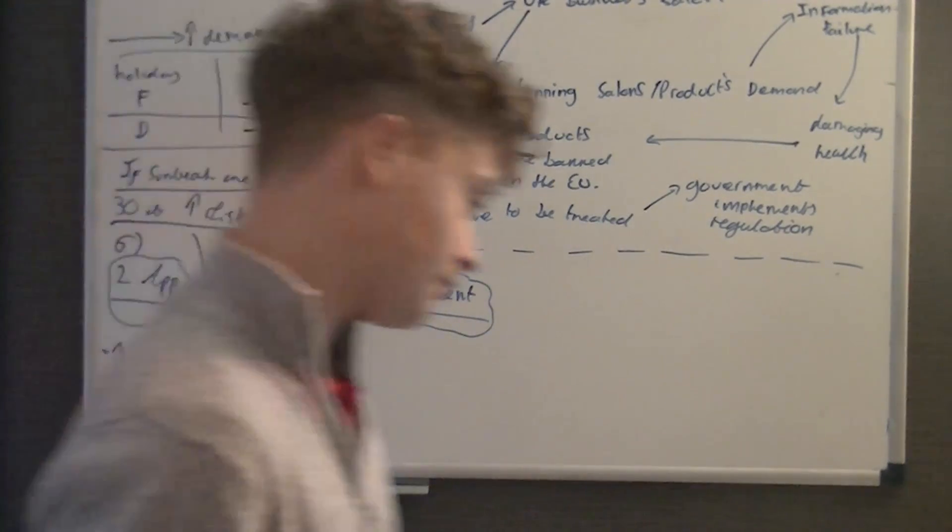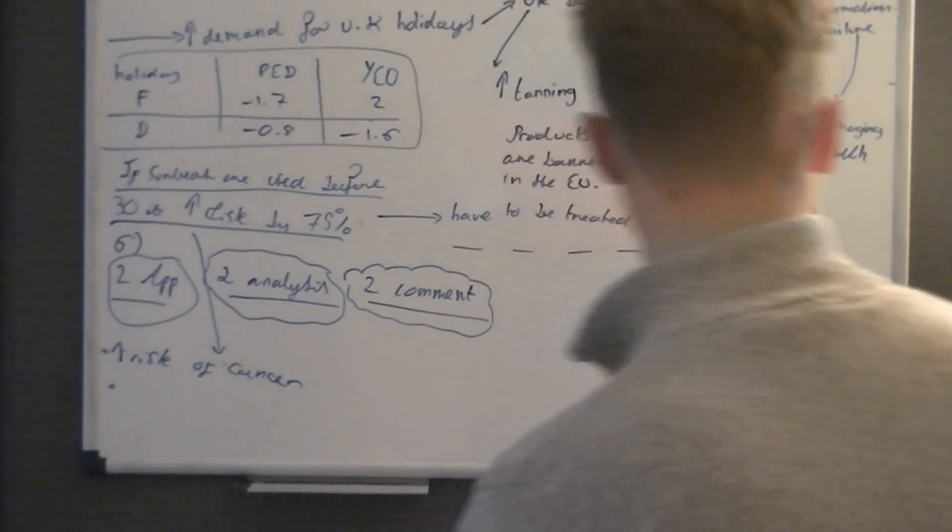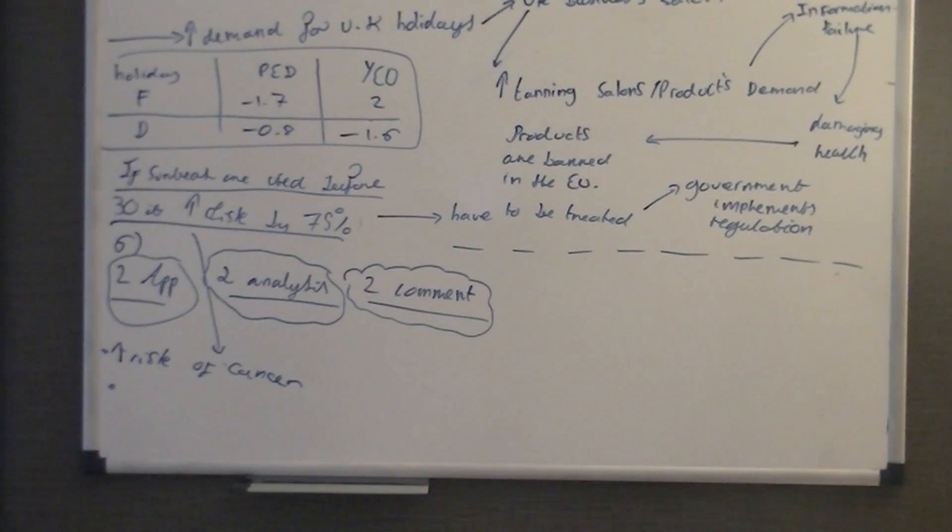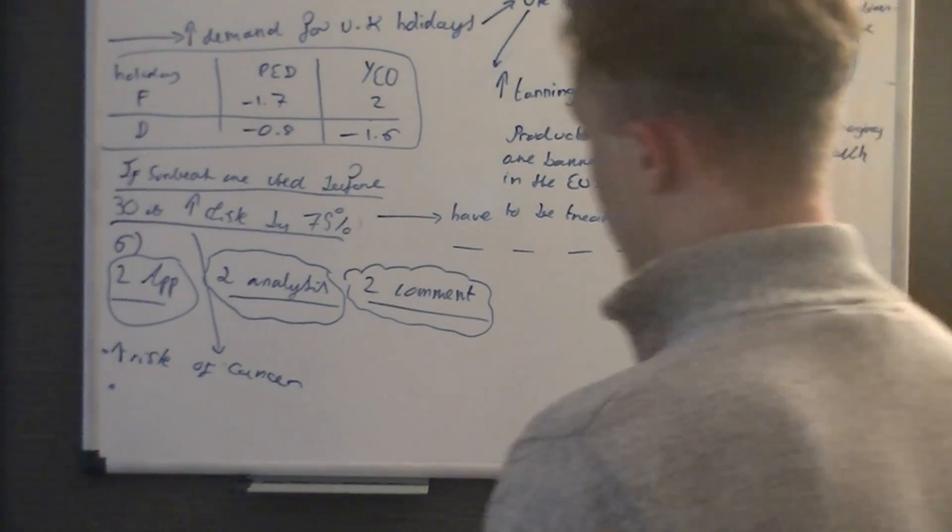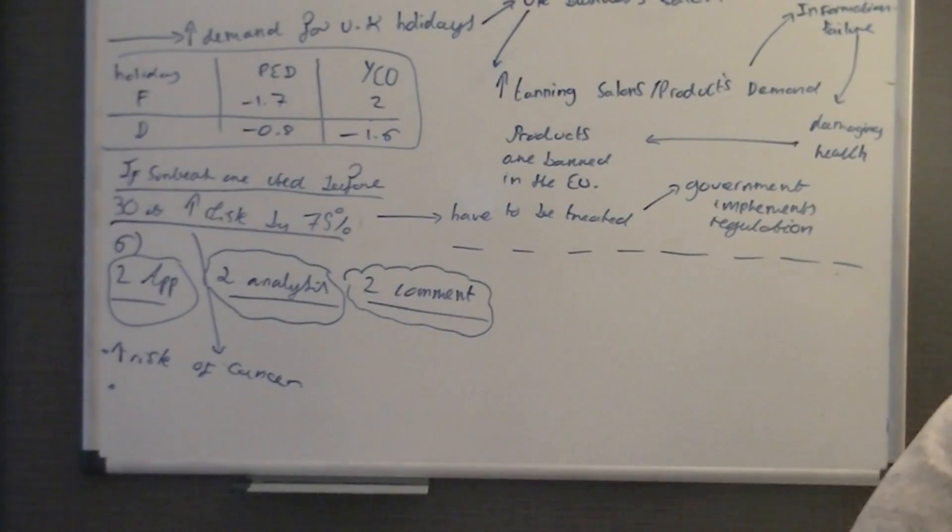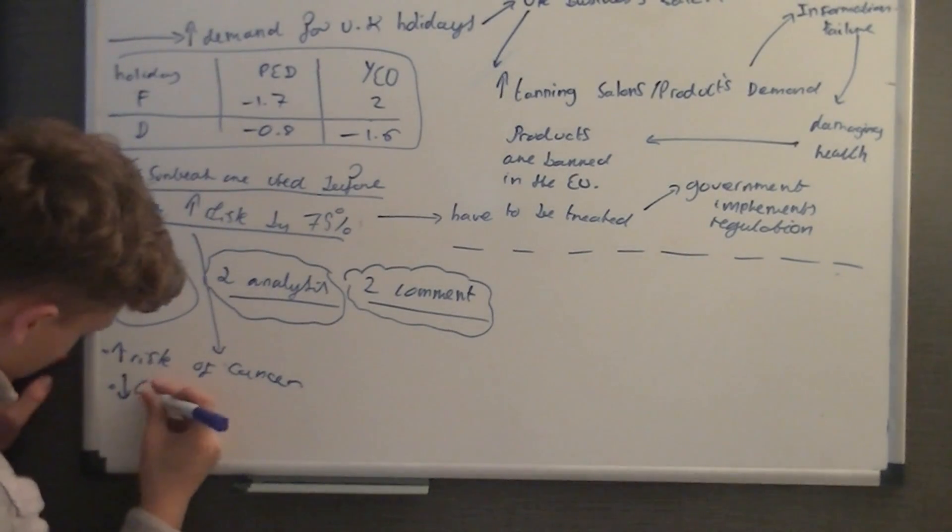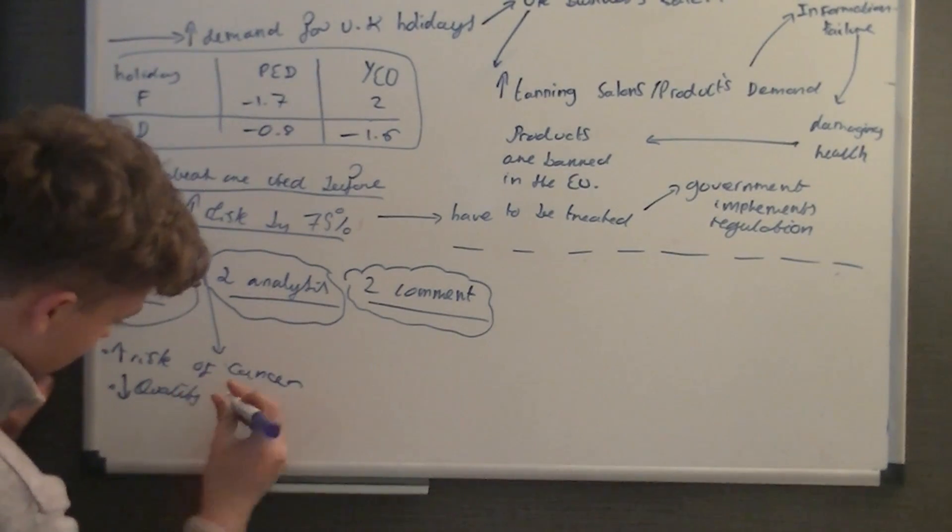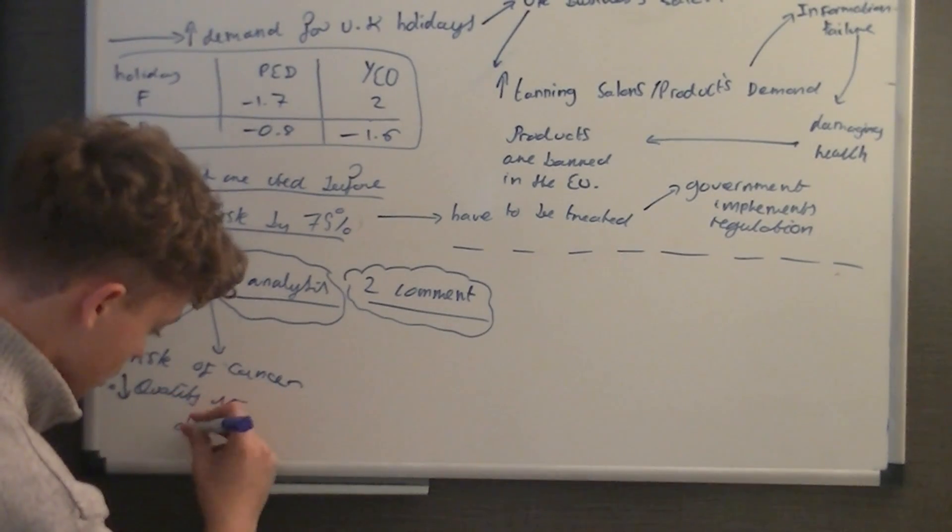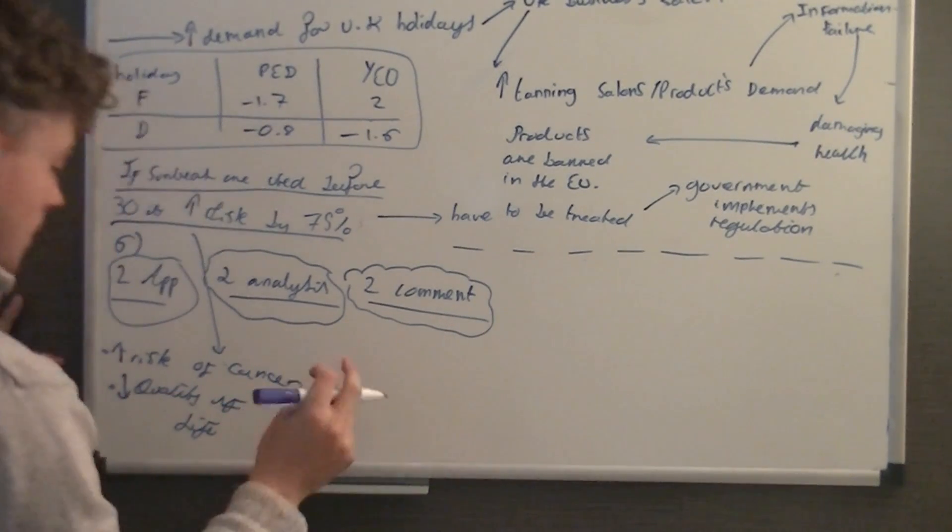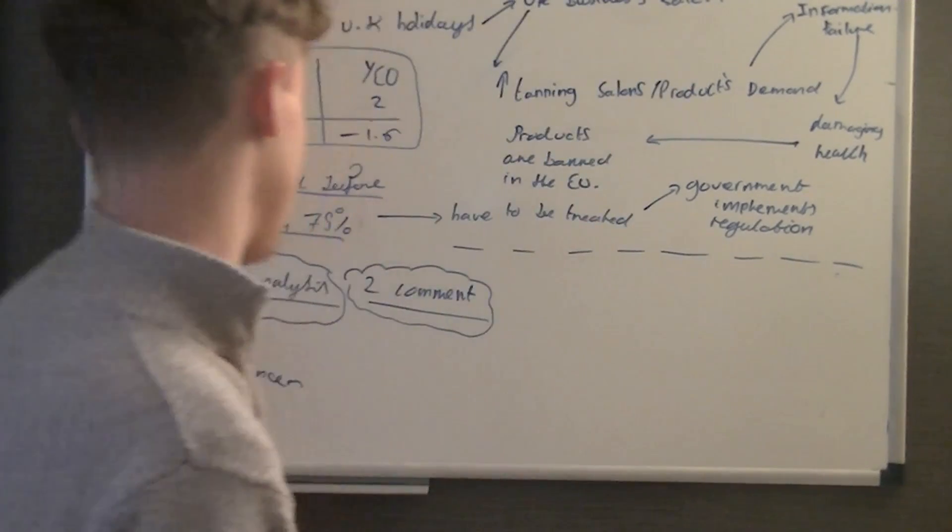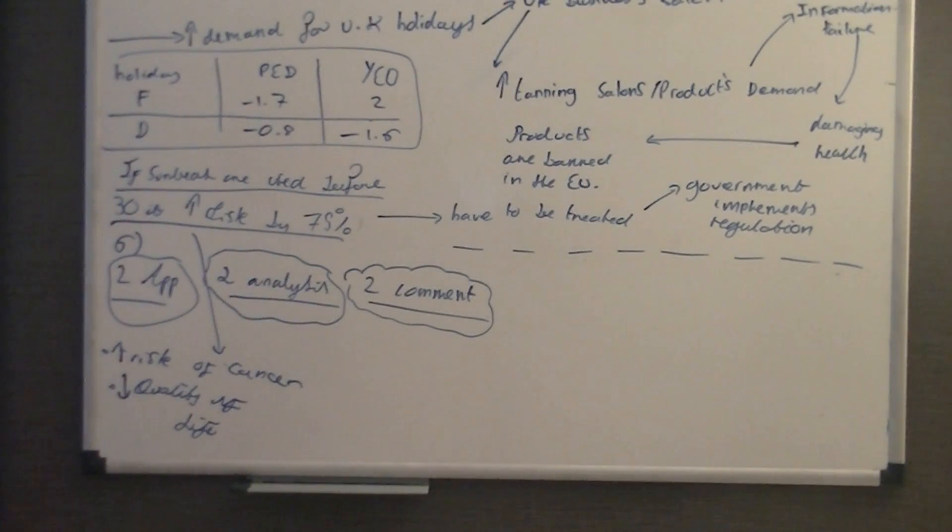Another point you could put, it says obviously cancer is shorter than life expectancy. So it reduces the quality of life. This basically may not be able to do things you could do before. This just, it's just from the sunbed, it's not necessarily the cancer, it's caused just the quality of life decreases. So your two application there.